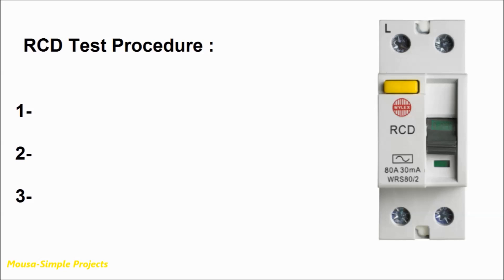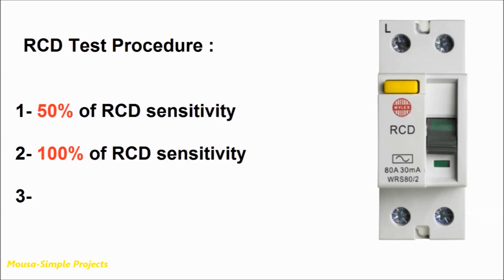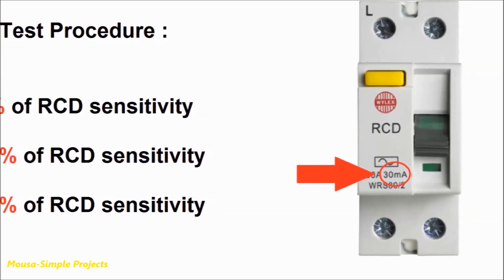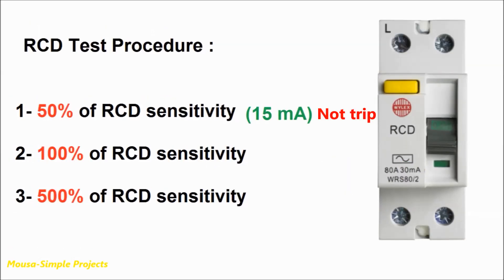We have to test it with leakage current of 50%, 100%, and 500% of its nominal sensitivity. Let's say we have an RCD with sensitivity of 30 mA. So we have to test it with 15 mA, 30 mA, and 150 mA of leakage current.